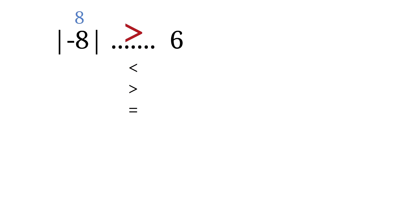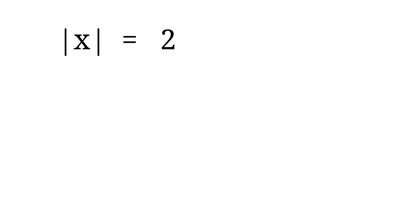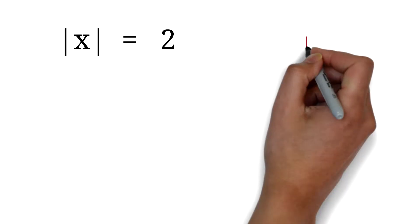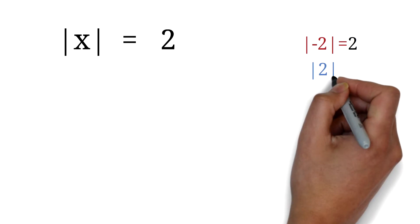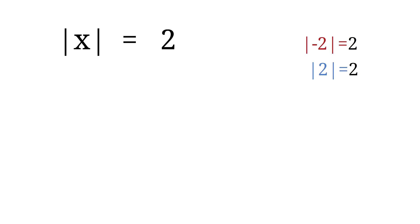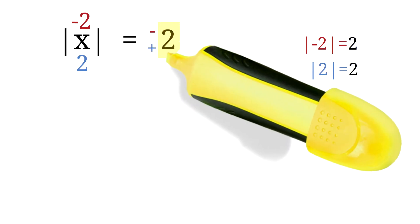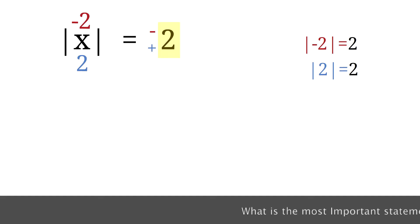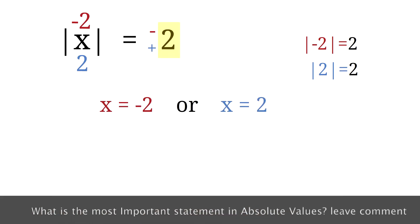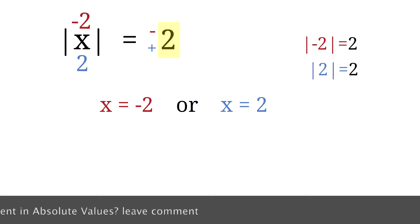Now let's move on to the actual solving of absolute value equations. The absolute value of x is 2. Find x. We know that the absolute value of negative 2 is 2, and also the absolute value of 2 is 2. This means x can be negative 2 or positive 2. Whatever is in the absolute value equals the positive or the negative of what is on the other side of the equation. So x equals negative 2 or x equals positive 2.